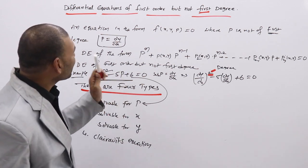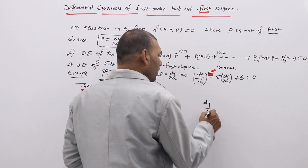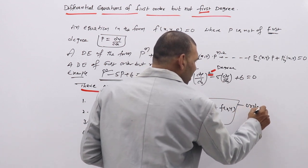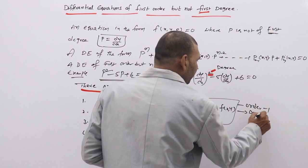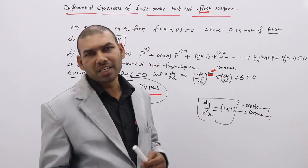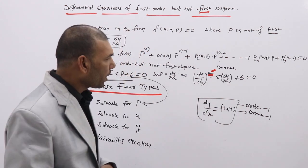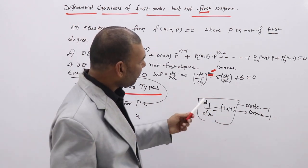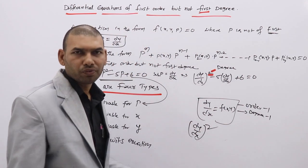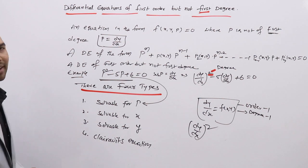Are you clear what is a DE of first order but not first degree? Till now we discussed differential equations of the form dy/dx = f(x, y) — that is called first order, first degree. We solved so many types: variable separable, homogeneous, exact, linear, Bernoulli. Now we are going to discuss when instead of dy/dx you have (dy/dx)² or (dy/dx)³ — how to solve that. That is exactly the concept we are discussing now.